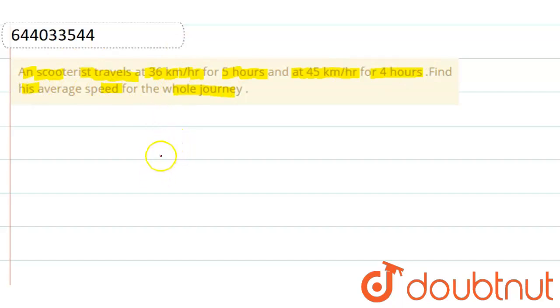Now, we know distance travelled at 36 km per hour is how much? That is 36 into 5, that is 180 km.